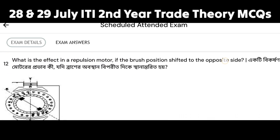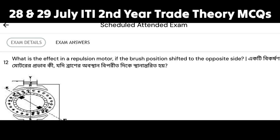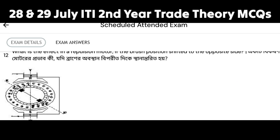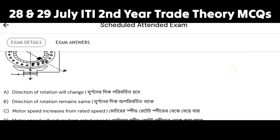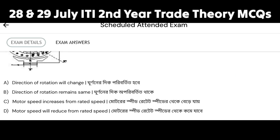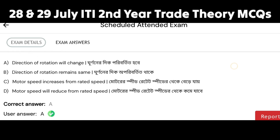What is the effect in a repulsion motor if the brush position is shifted to the opposite side? The options are: the direction of rotation remains the same, motor speed increases from rated speed, motor speed will reduce from rated speed. When the brush position is shifted to the opposite position, the direction of rotation is the correct answer.